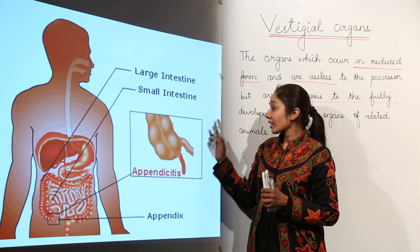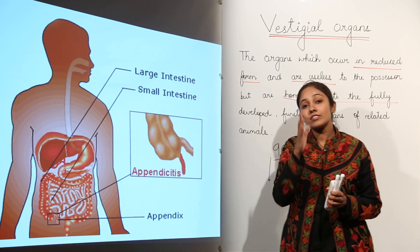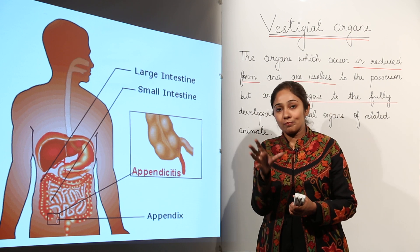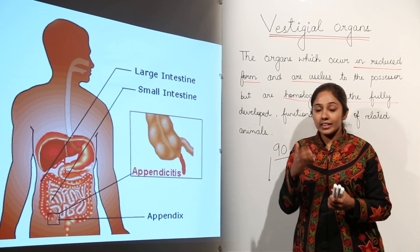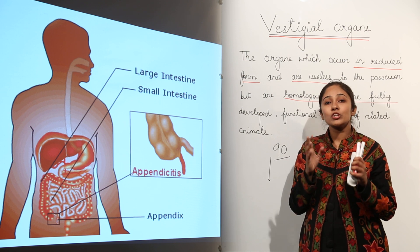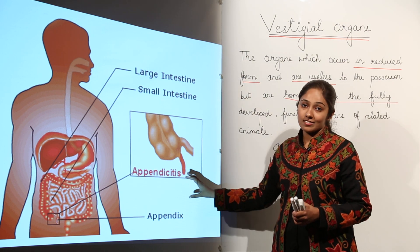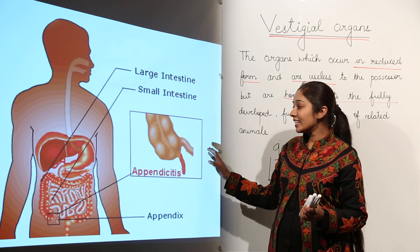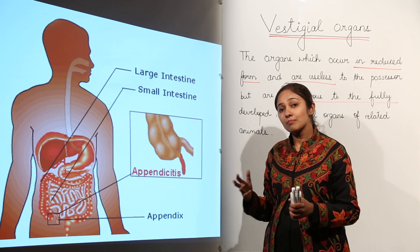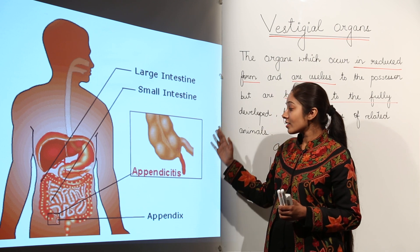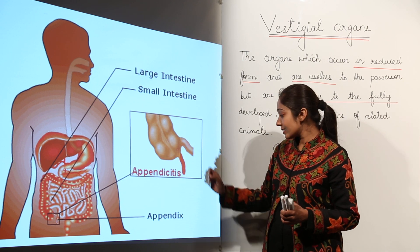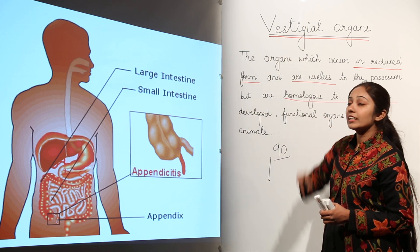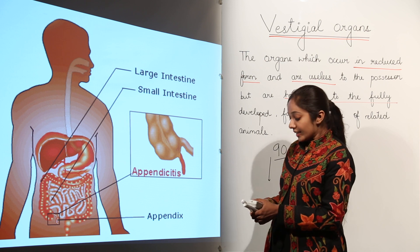Earlier, the appendix was thought to help with digestion of cellulose when our ancestors ate raw food. But now, since we eat properly cooked and soft food, we don't need this organ. Since it is useless, it can cause trouble — a disease named appendicitis. So the appendix is a vestigial organ in human beings.